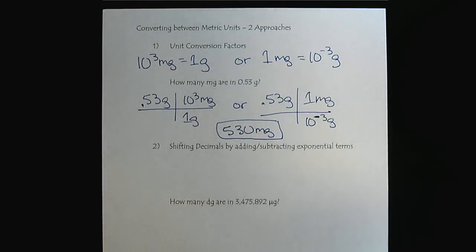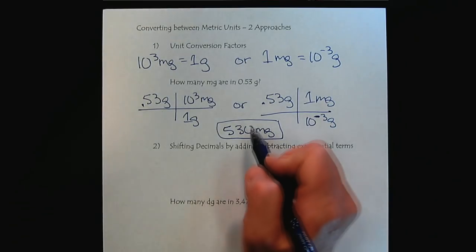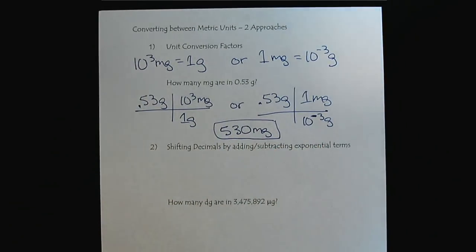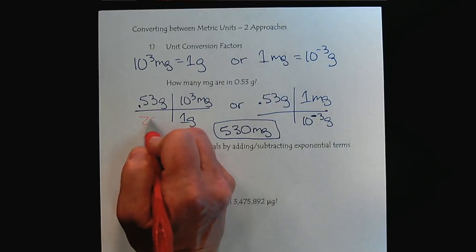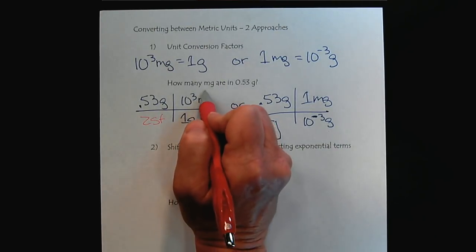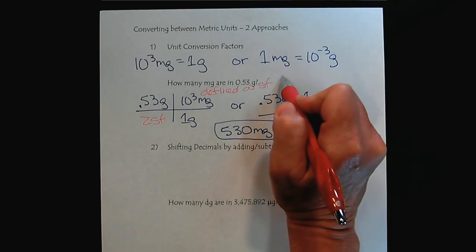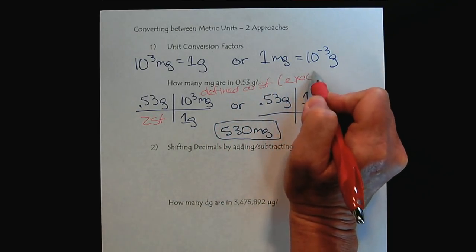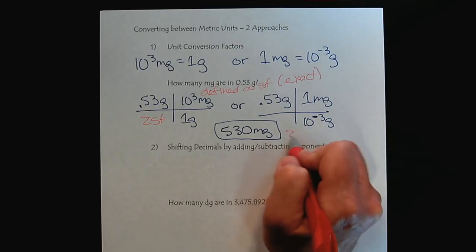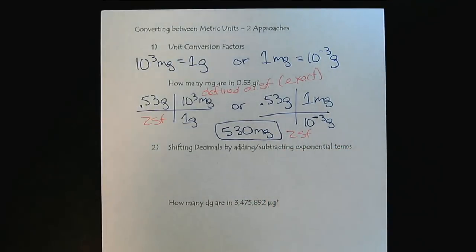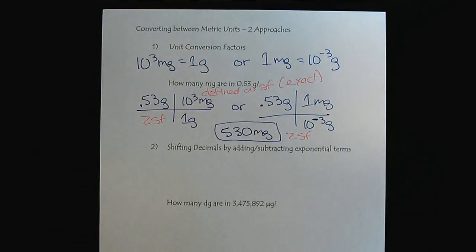And because we are working within the metric system, the sig figs will never change. If we have two sig figs to start, this is defined. So it has infinite sig figs, or you can think of it as exact. So our final result should have two sig figs.